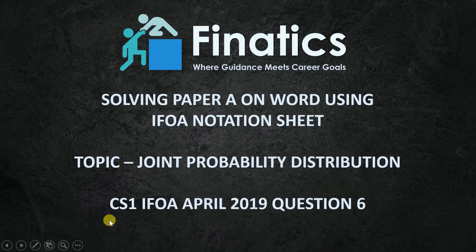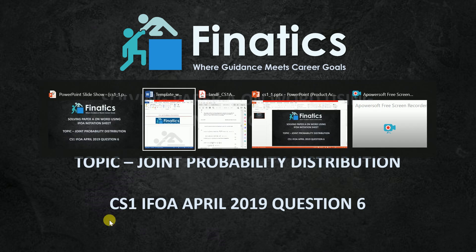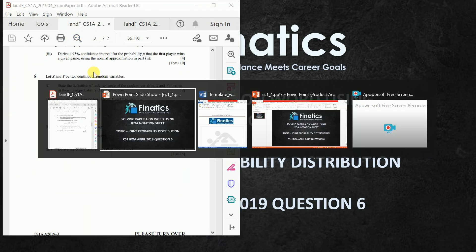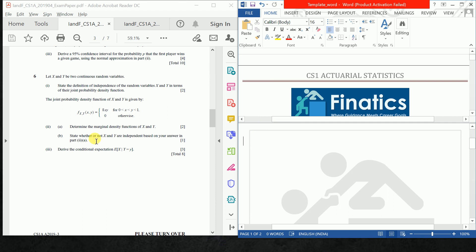Hi, in this video I will be solving CS1 Paper A on Word using IFO notation sheet. The topic which will be covered is a joint probability distribution question from CS1 IFO April 2019 paper. This is the question paper which we will be solving and I will just use Word also.